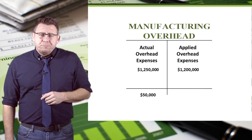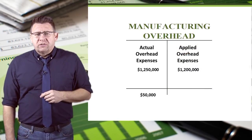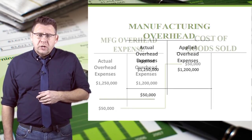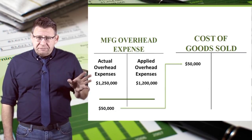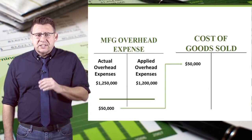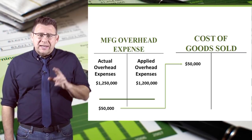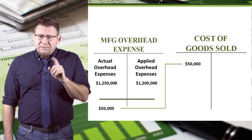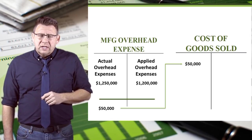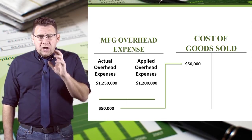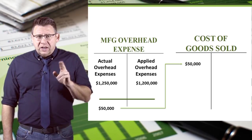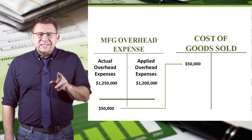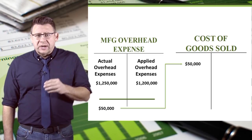Let's look at an example. Let's assume that manufacturing overhead is under-applied by $50,000. We move $50,000 from manufacturing overhead to cost of goods sold by crediting overhead and debiting cost of goods sold. Now we've increased the cost of goods sold. Since manufacturing overhead was under-applied, and therefore our jobs were under-costed, this now increases the cost of our jobs to the correct amount.